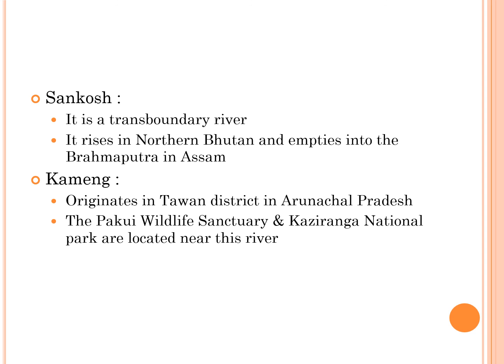The next right tributary of the Brahmaputra is Sankosh river. It is a transboundary river that rises in northern Bhutan and empties into the Brahmaputra in the state of Assam. The fifth right tributary is Kameng river, which flows in the eastern Himalayan mountains and originates in Tawang district of Arunachal Pradesh. The Pakke Wildlife Sanctuary and the Kaziranga National Park are located near the Kameng river.